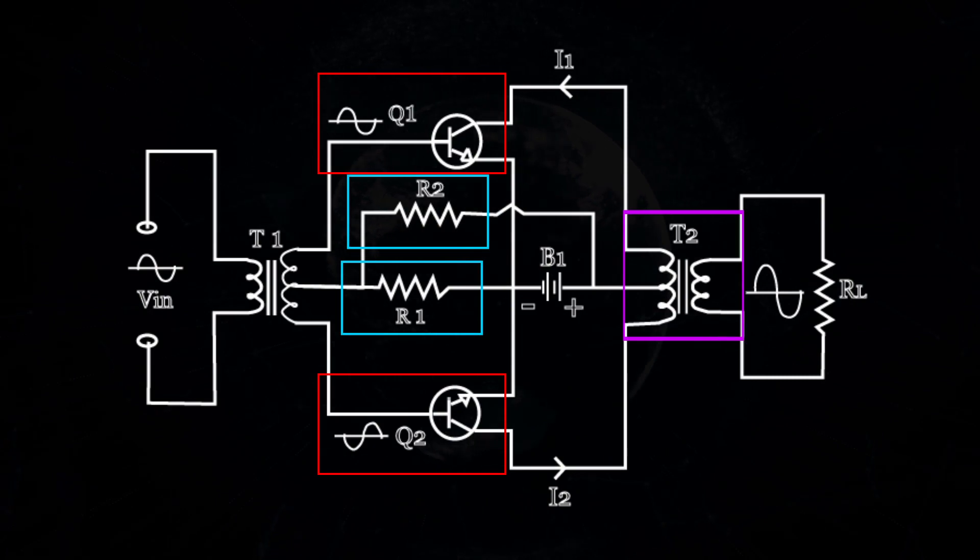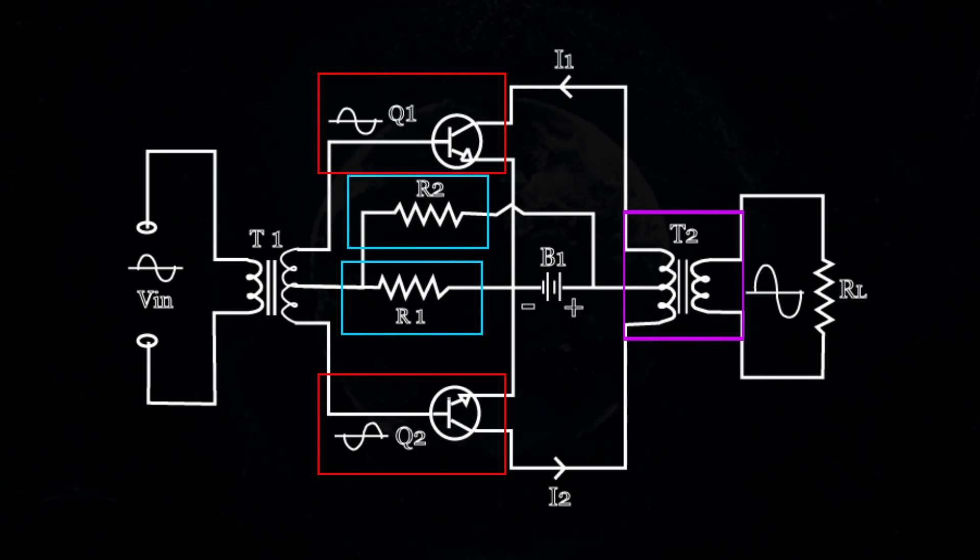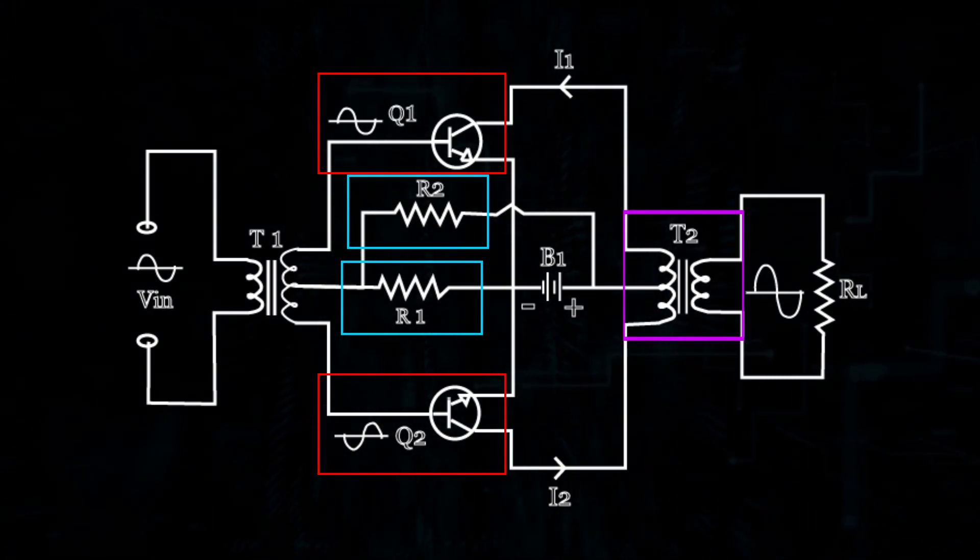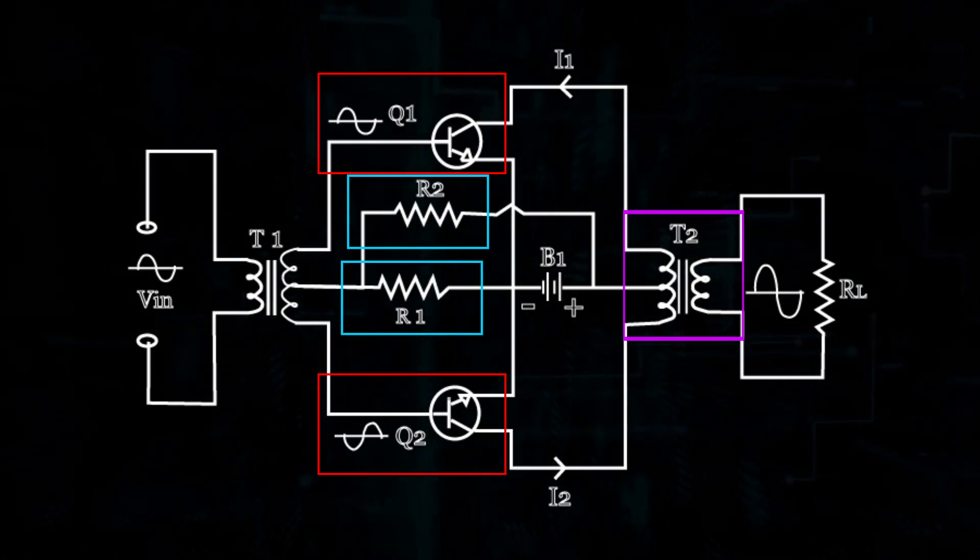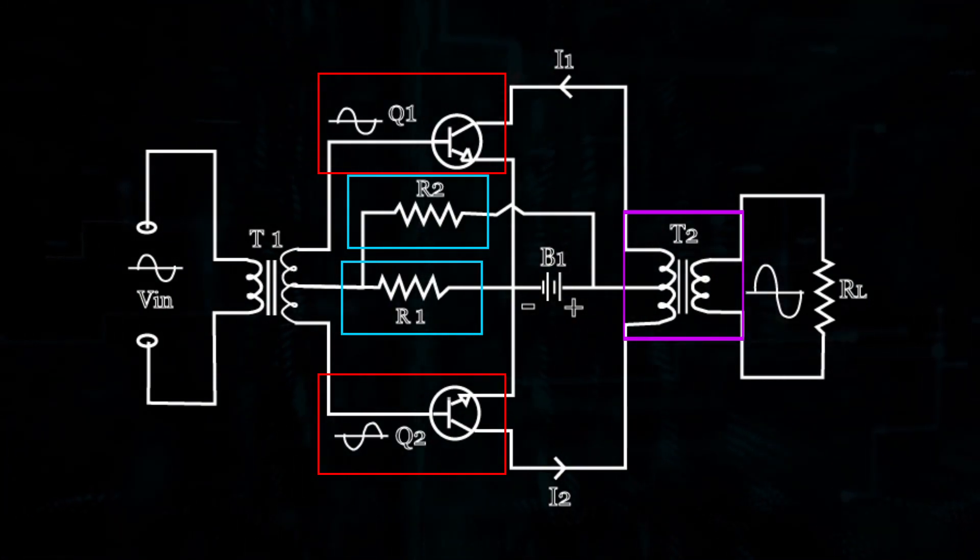R1 and R2 are meant for biasing the transistors. Collector terminals of the two transistors are connected to the respective ends of the primary of the output transformer T2.